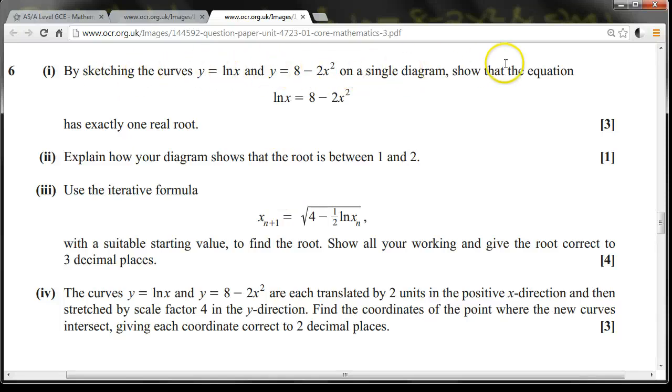By sketching these curves on a single diagram, show that this equation has exactly one real root. Explain how your diagram shows that the root lies between 1 and 2. Use this iterative formula with a suitable starting value to find the root. Show all your working and give the root correct to three decimal places. These curves are each translated by two units in the positive x direction and then stretched by a scale factor of 4 in the y direction. Find the coordinates of the point where the new curves intersect, giving each coordinate correct to two decimal places.